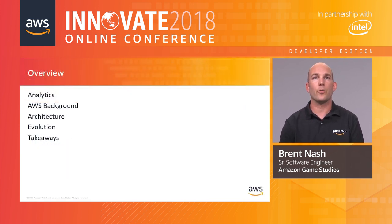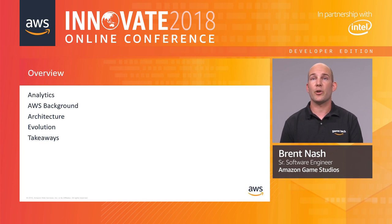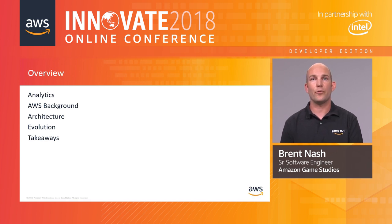This is the overview of what we're going to cover today. We'll start with talking about analytics for games — why they matter, why they're important for game development. We'll talk about the AWS background, the benefits of building in AWS, and introduce some of the key services we're going to use. We'll spend most of the presentation talking through the architecture from how we produce data all the way through how we analyze it. We'll touch on the evolution of the architecture and conclude with some takeaways.